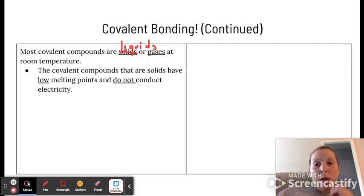The covalent compounds that are solids tend to have very low melting points. They might be solid at room temperature, but not for long. Raise the temperature two degrees and it will melt, and they do not conduct electricity. These are used more as insulators and stuff.